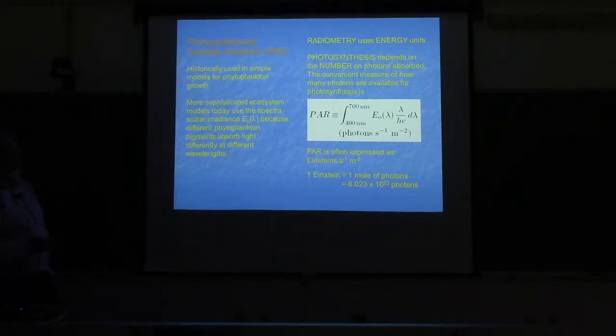There's what's called the photosynthetically available radiation or PAR. I'll take my radiometer and measure the spectral scalar irradiance in energy units, then divide that by the energy per photon.